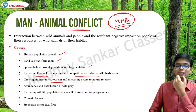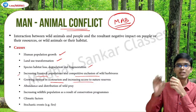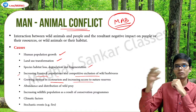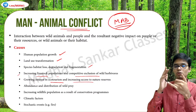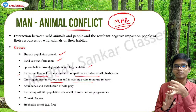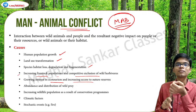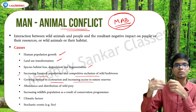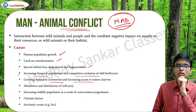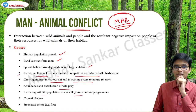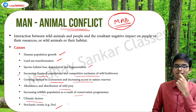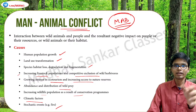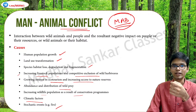Growing interest in ecotourism and increasing access to natural resources is another cause - in the name of ecotourism we go into the homes of animals and plants. We make those places polluted due to unscientific construction, which leads to huge threats to the habitat, forcing animals to migrate into human territory. Other factors include abundance and distribution of wild prey, increasing wildlife population as a result of conservation programs, climatic factors, and stochastic events such as fire.